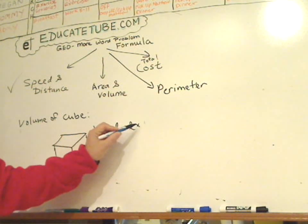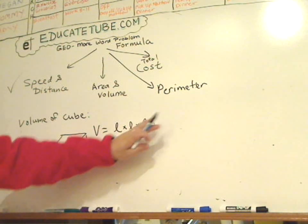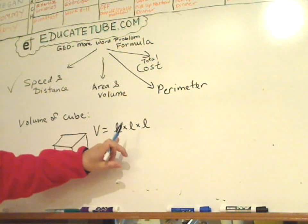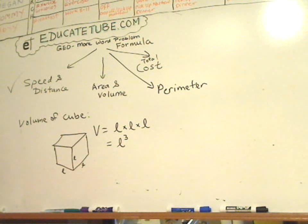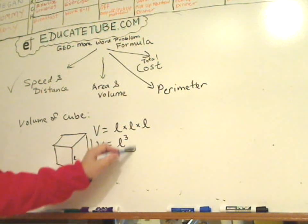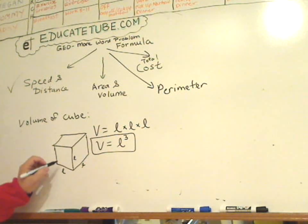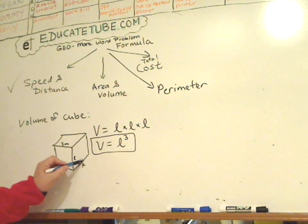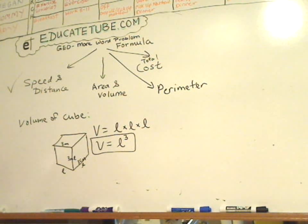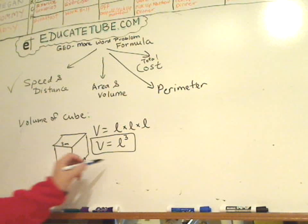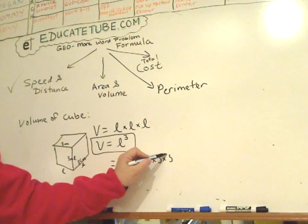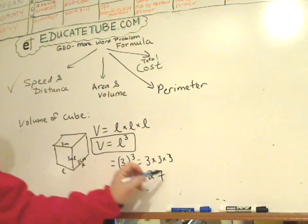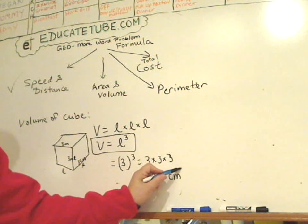Since they're all the same, it's length times length times length — on the side, on the front, and the height. That would be equivalent to length cubed. So that's the formula for the cube. For example, if this was 3 centimeters on the side, 3 centimeters in front, and 3 centimeters high, it's 3 cubed — that is 3 times 3 times 3, which is 27. So the unit would be centimeter cubed.